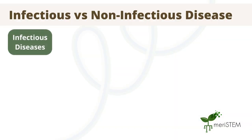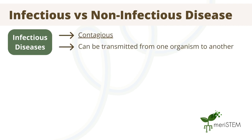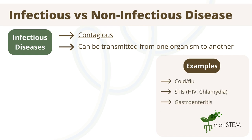Infectious diseases are those that are contagious. This means that they can be transmitted from one sick organism to a healthy one, passing on the disease. Some examples of infectious diseases are the common cold and the flu, sexually transmitted infections such as HIV or chlamydia, and gastroenteritis, also known as gastro or a stomach bug.